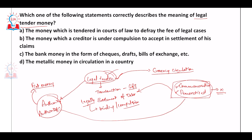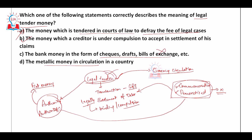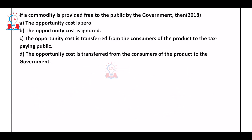Looking at the options: option A — 'money tendered in courts of law to defray the fee of legal cases' — does not fit. Option B — 'money which a creditor is under compulsion to accept in settlement of claims' — fits the definition and is a broader definition. Option D mentions only metallic money in circulation, which is narrower. So the answer is B.